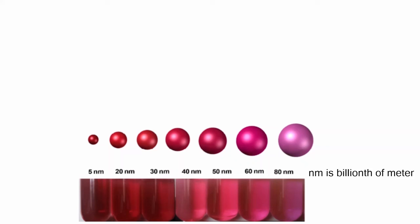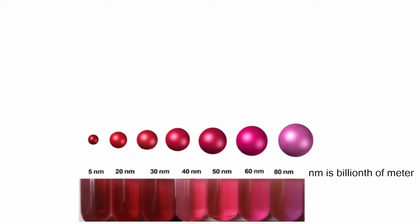A quantum dots gets its name because it is tiny dot of metal so small that it effectively concentrated into a single point. We can even call it a zero dimensional.